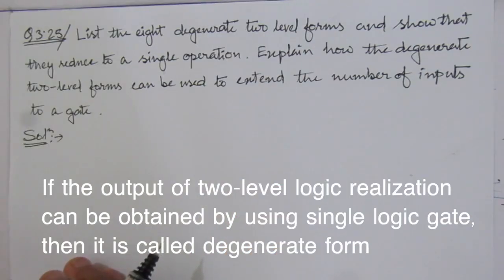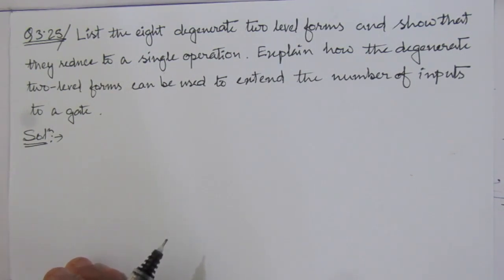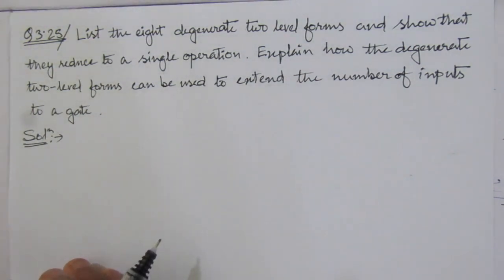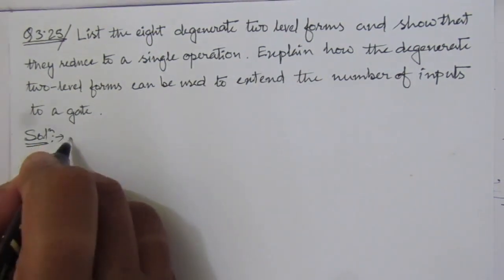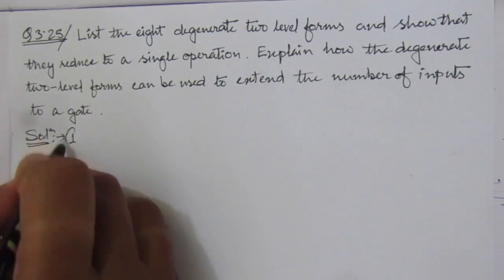The number of inputs of a logic gate will be increased, and we have 8 degenerate forms which we will discuss one by one. So first of all, we will see the first degenerate form.